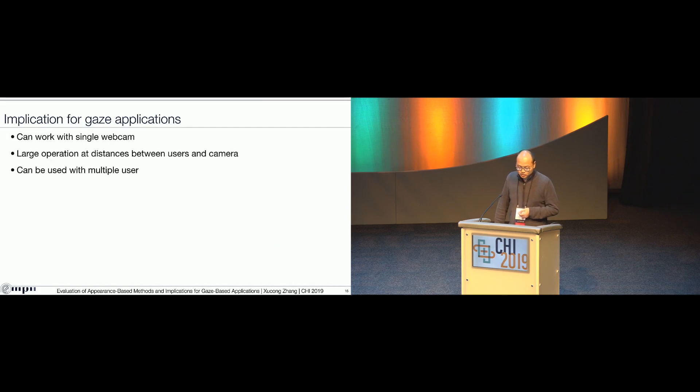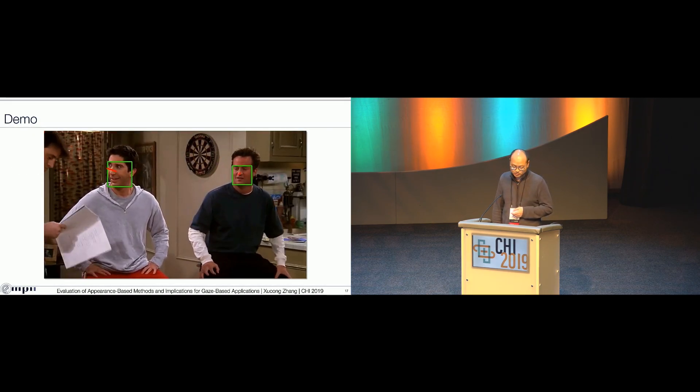So in summary, our OpenGaze toolkit enables different new forms of gaze-based applications because it can work with a single webcam. It has a large operation distance between user and camera. And last but not least, as shown in the animation previously, this toolkit can work with multiple users. In contrast, the commercial eye tracker can just work with a single user. And that's where I end my talk. Thanks for your attention and please enjoy our demo.